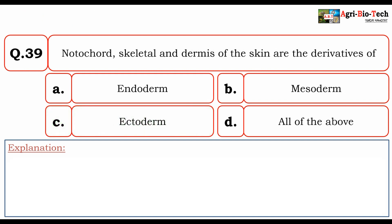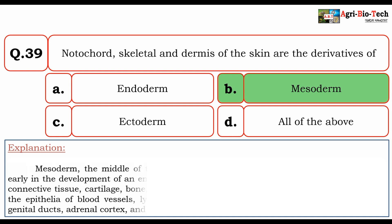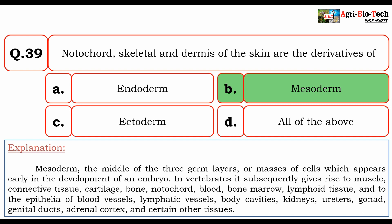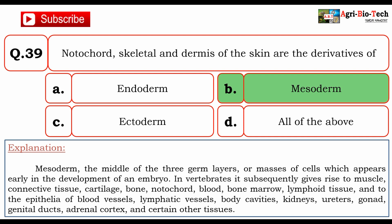Next question: notochord, skeletal tissue, and dermis of the skin are derivatives of — A) endoderm, B) mesoderm, C) ectoderm, or D) all of the above. The correct option is B) mesoderm. Mesoderm is the middle of the three germ layers that appears early in the development of an embryo. In vertebrates, it subsequently gives rise to muscle, connective tissue, cartilage, bone, notochord, blood, bone marrow, lymphoid tissue, and the epithelia of blood vessels, lymphatic vessels, body cavities, kidneys, uterus, gonads, genital ducts, adrenal cortex, and certain other tissues.